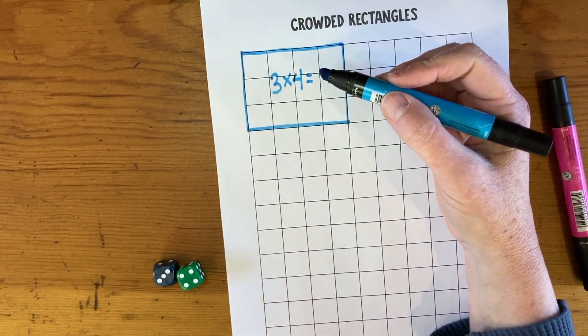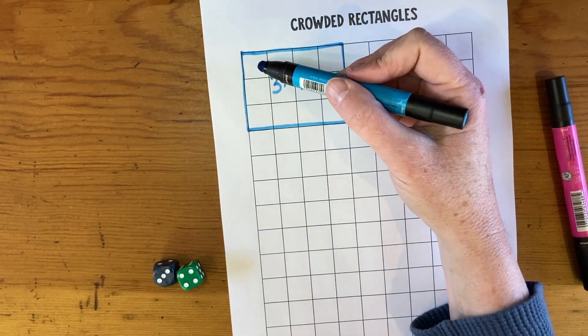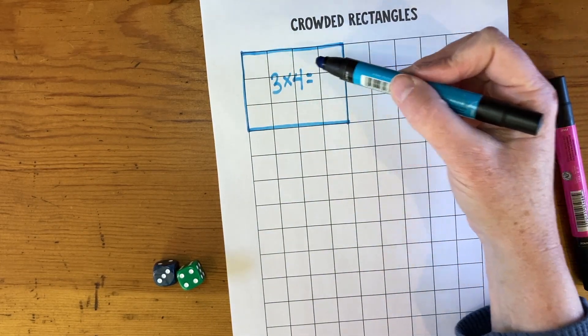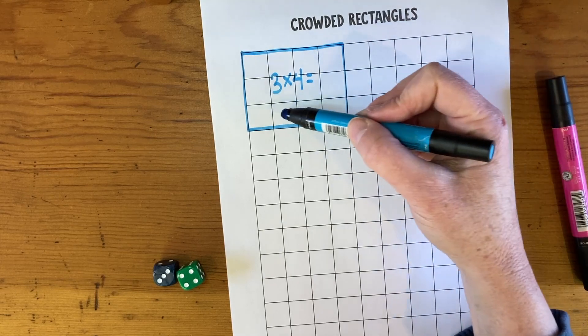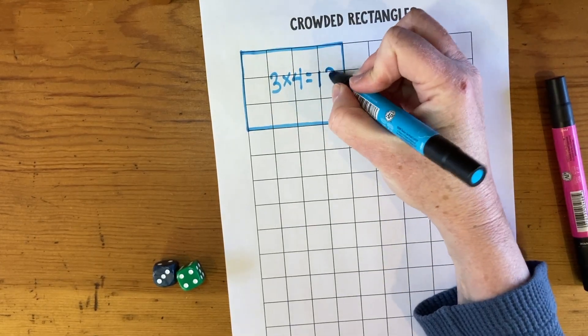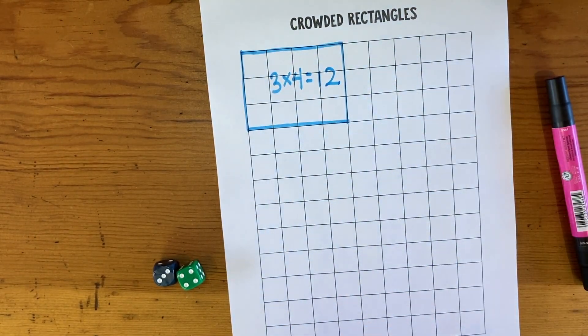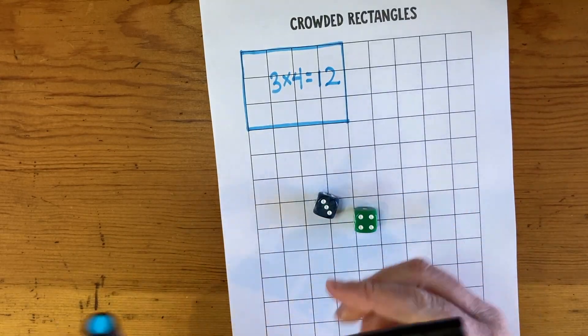Now if you make a rectangle and you don't know the answer to your multiplication problem, you can just count the squares: one, two, three, four, five, six, seven, eight, nine, ten, eleven, twelve. So then the next player will go and pink got three times four.